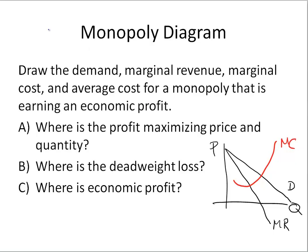To find how much to produce, I'll put that in blue. Here's my Quantity, and there's my Price. The reason I drew it there is because the profit-maximizing price and output is where Marginal Revenue is equal to Marginal Cost.